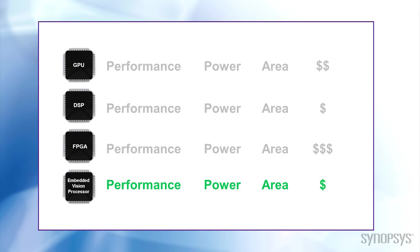Only an embedded vision processor is optimized specifically to handle the types of tasks required for high-performance embedded applications that are typically area and power constrained.